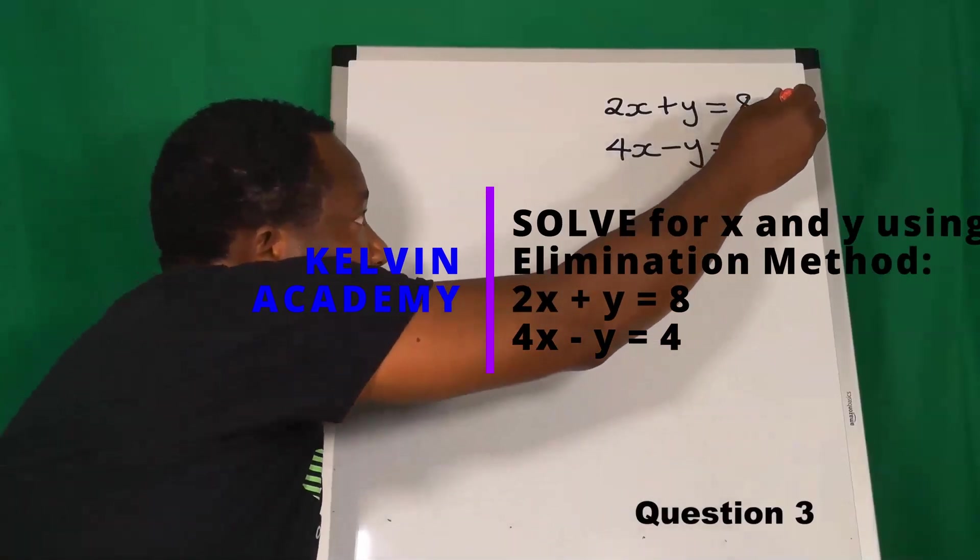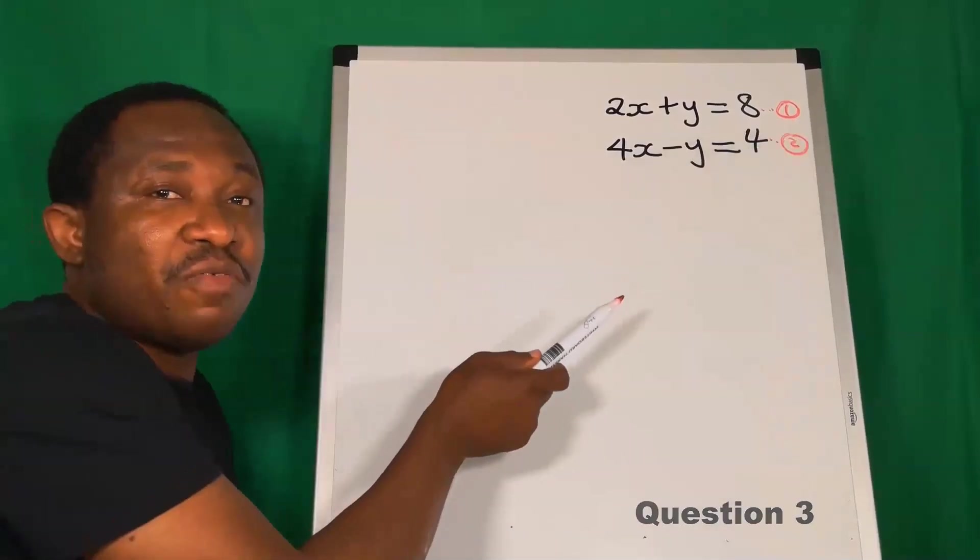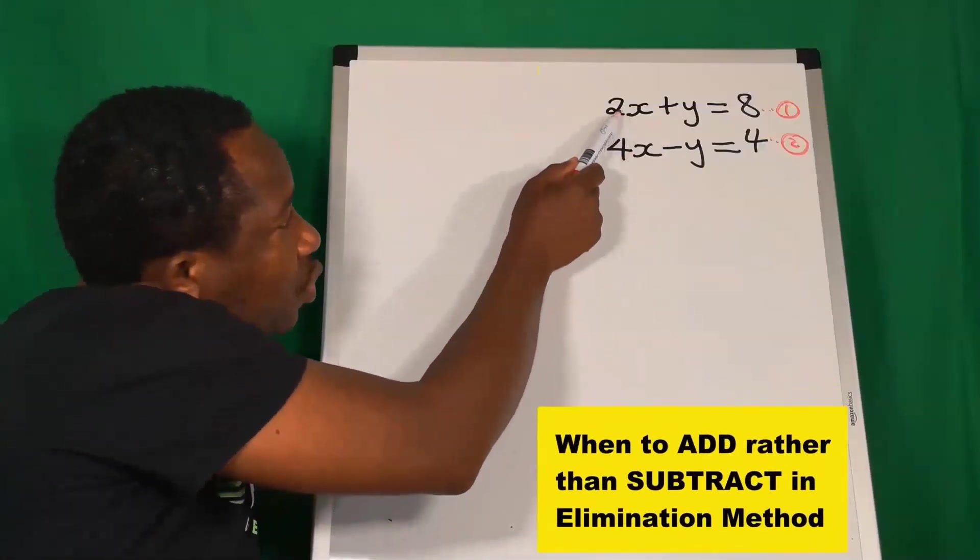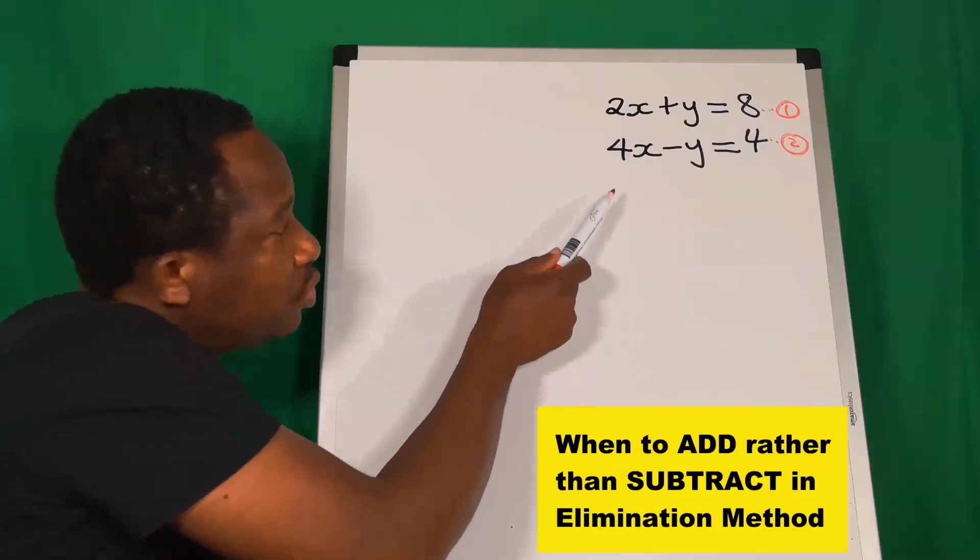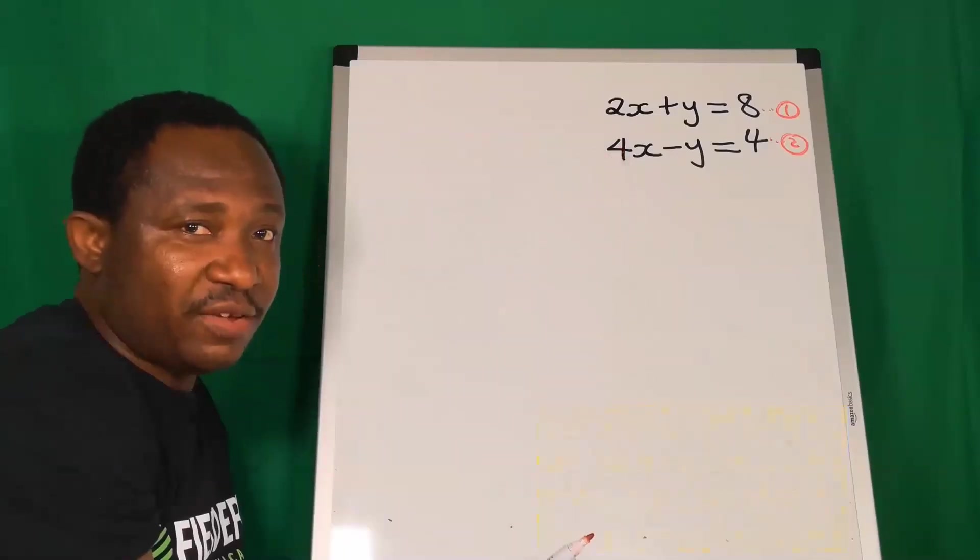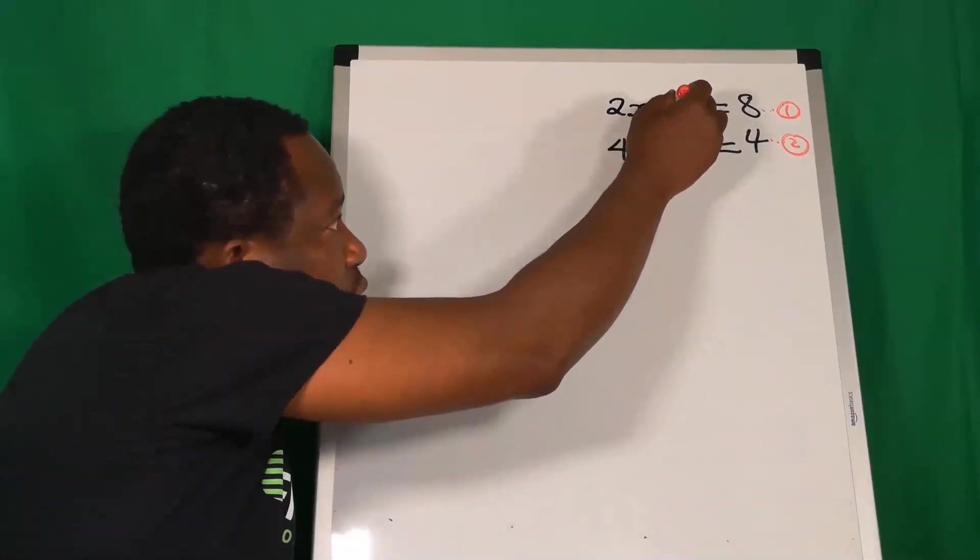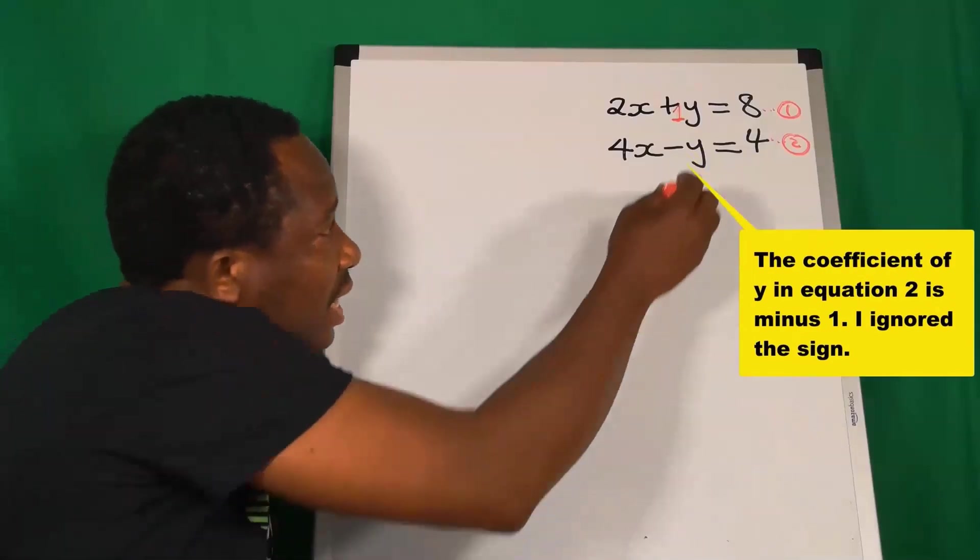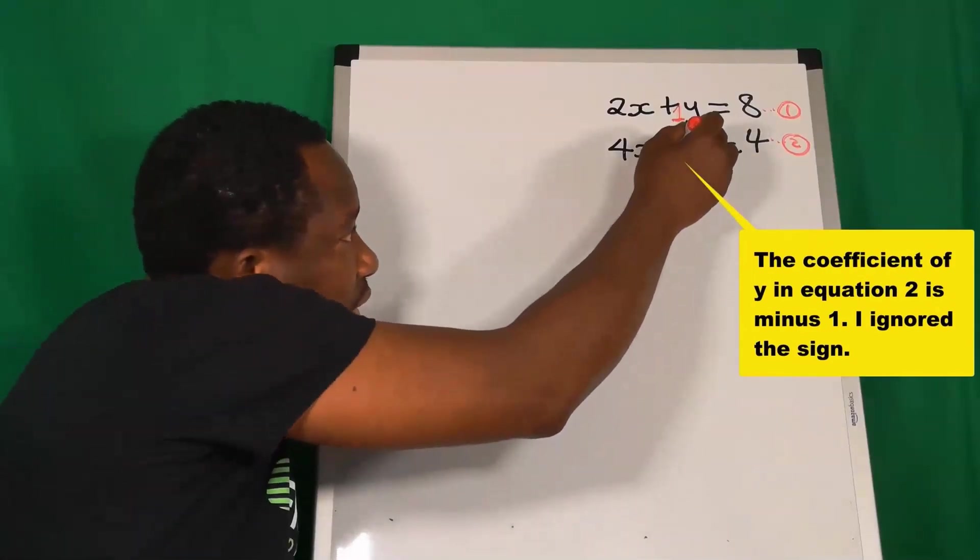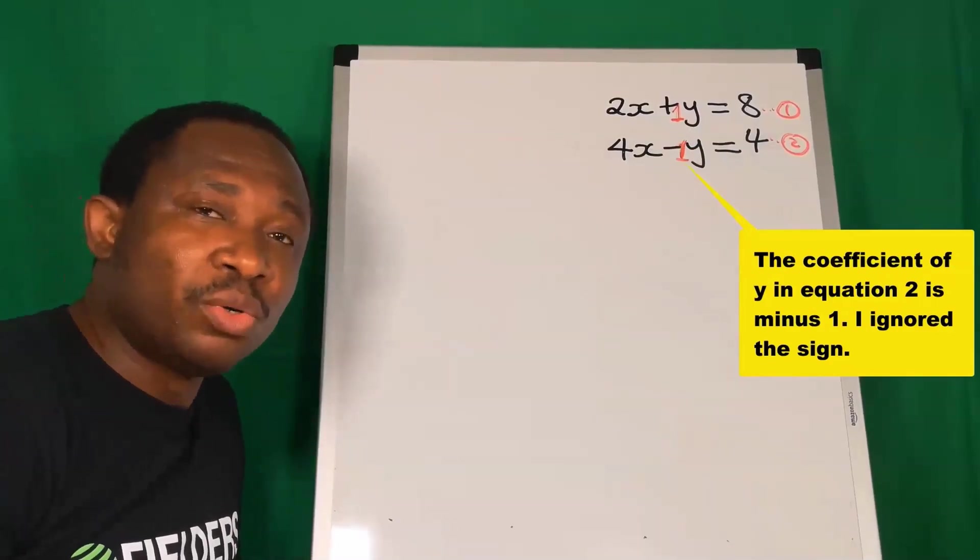This is equation 1 and we have this as equation 2. The coefficient of x in equation 1 is 2, and the coefficient of x in equation 2 is 4 - they are different. The coefficient of y in equation 1 is 1, and the coefficient of y in equation 2 is also 1. Remember, when it is 1, we don't usually write it.